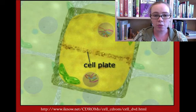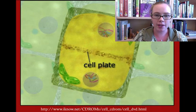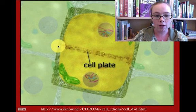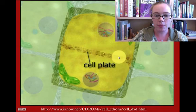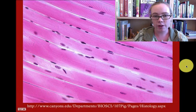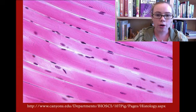We just finished watching telophase and cytokinesis in an animal cell. It's important to note that in plant cells they do not cleave, because they have a cell wall. Instead, they form a cell plate, which divides the two cells. Additionally, some cells, like these muscle cells, do not undergo cytokinesis at all — they are multi-nucleated cells.